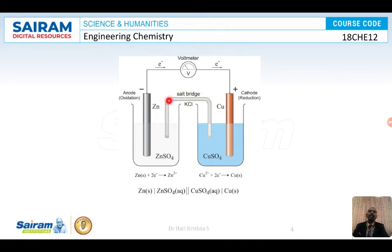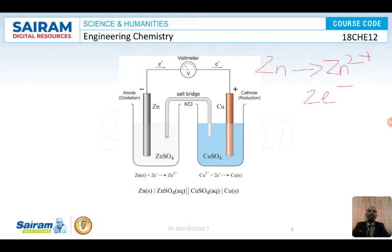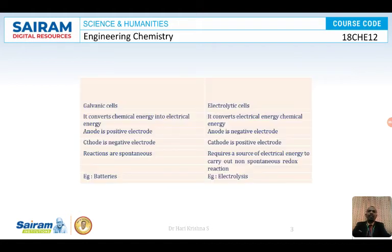The zinc half cell is connected to the copper half cell through a salt bridge and to the voltmeter. The salt bridge is there to maintain electrical neutrality. When zinc is dipped in zinc sulfate solution, zinc undergoes oxidation, liberating two electrons: Zn → Zn²⁺ + 2e⁻. These electrons move from zinc towards the cathode.